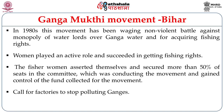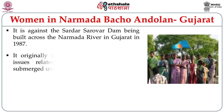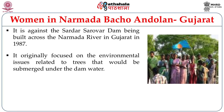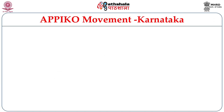This was also a movement that called for factories to stop polluting the Ganges River. The Narmada Bachao Andolan in Gujarat was against the Sardar Sarovar Dam being built across the Narmada River in 1987. It originally focused on environment-related issues concerning trees that would be submerged under the dam water. Women played an equal role on par with men in defending their rights in this movement.